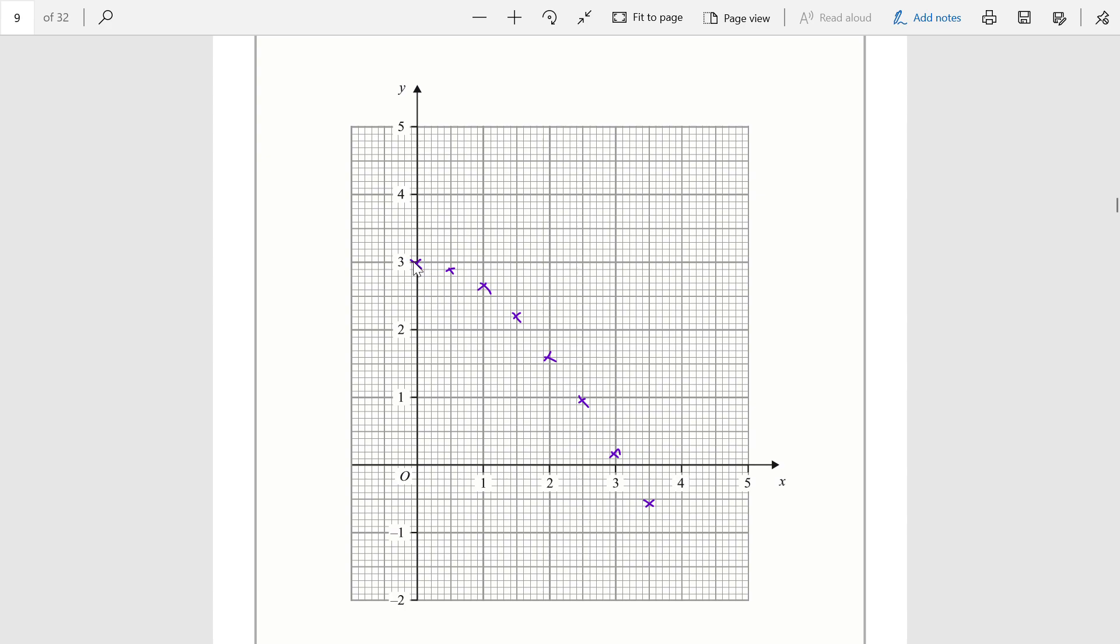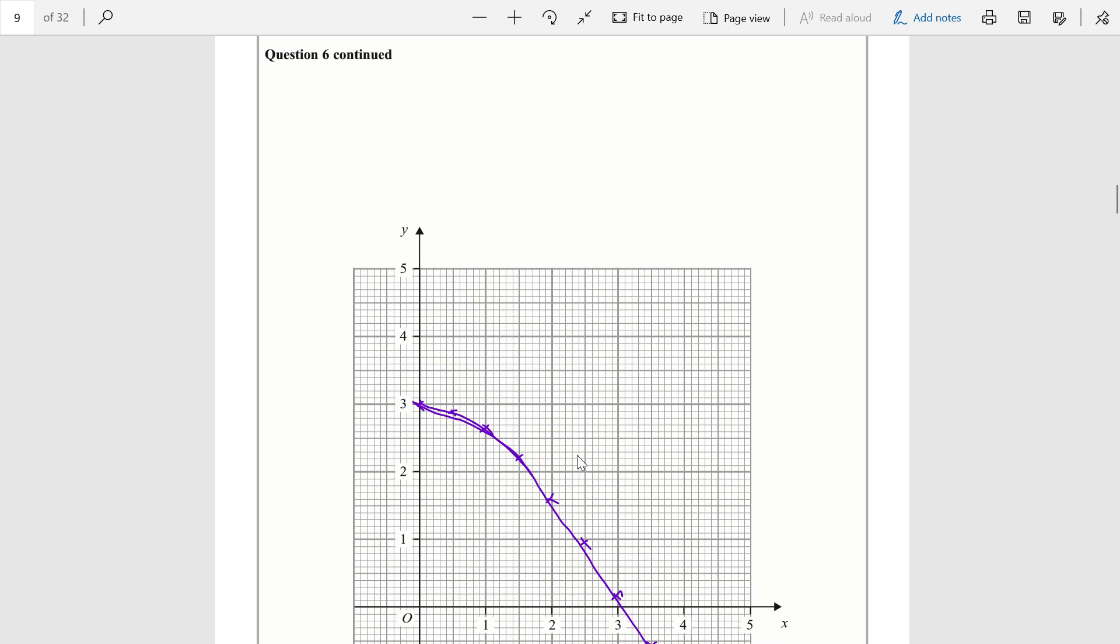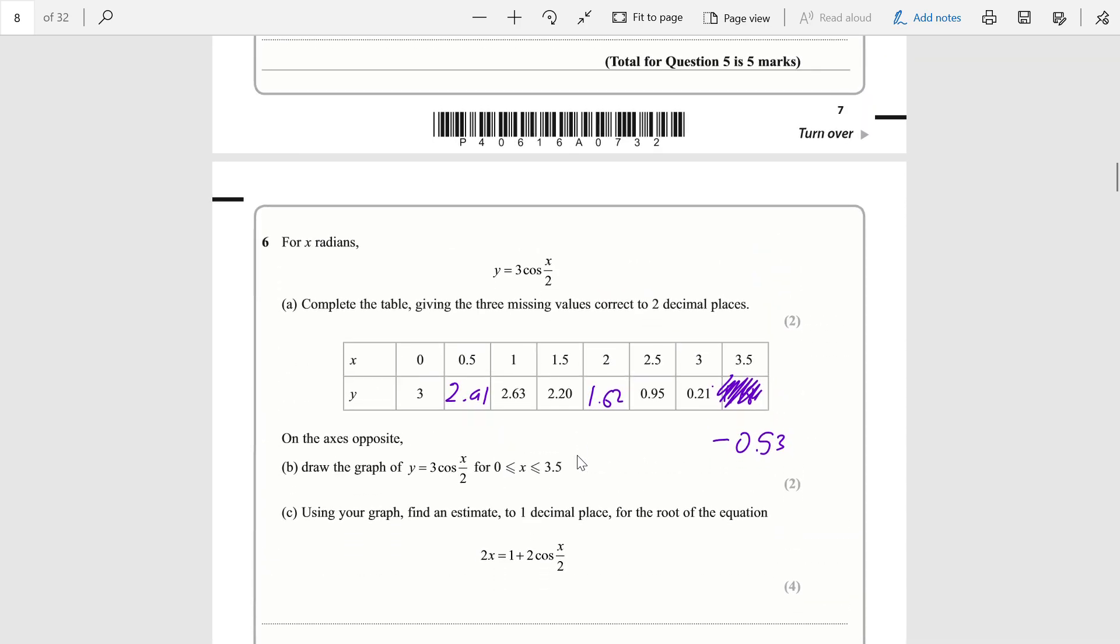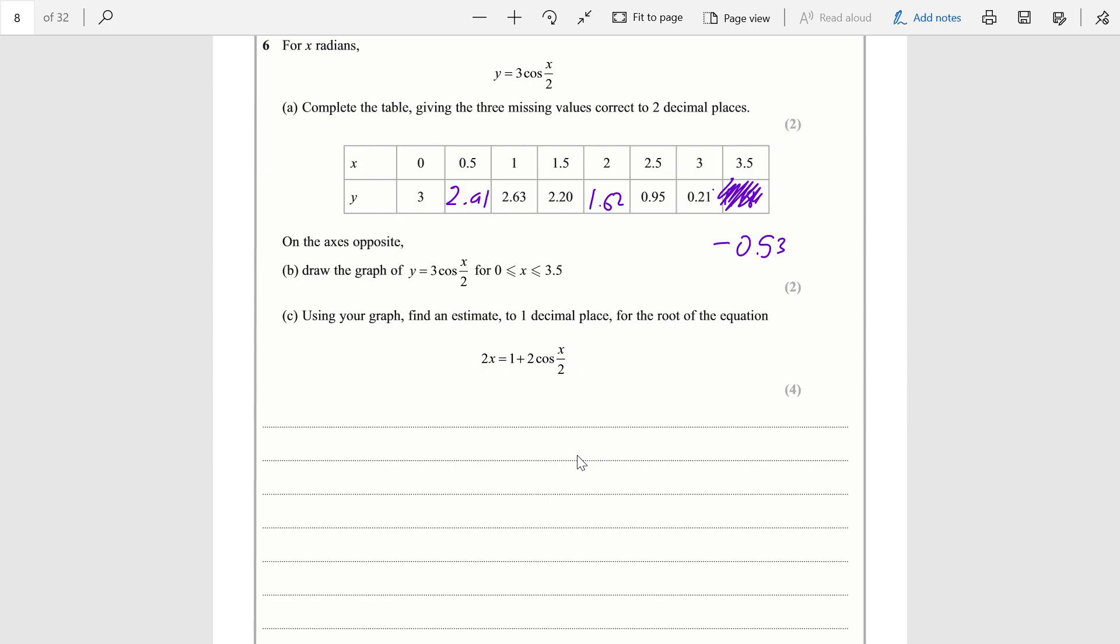And we get our curve of best fit. Marks would be lost for this kind of error where the line does not pass through the points, but I'm on a pen tablet, I'm just trying my best.